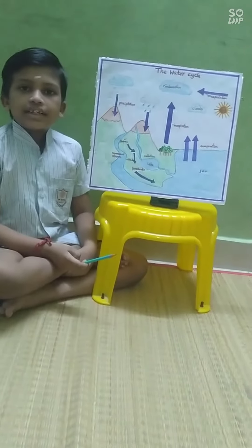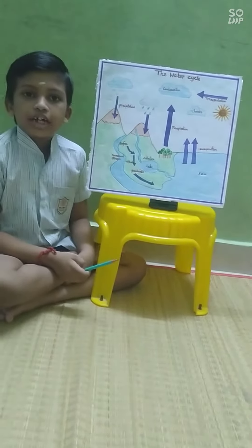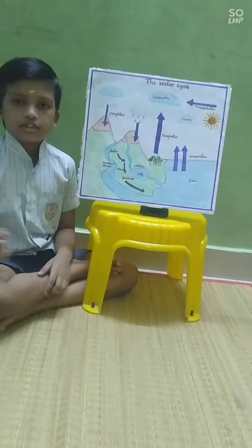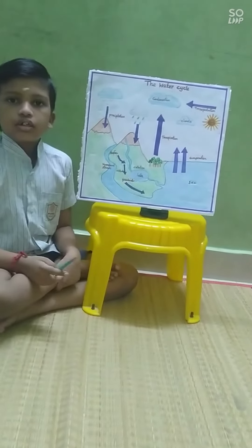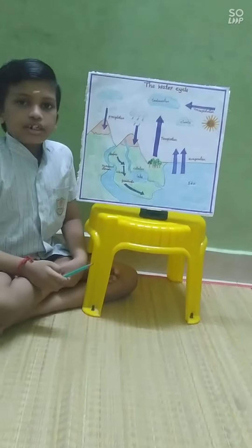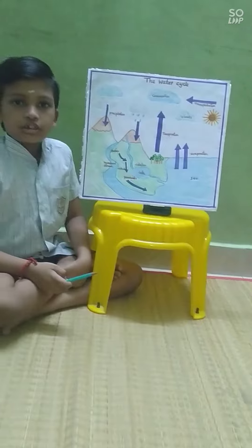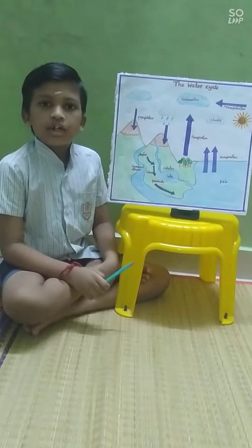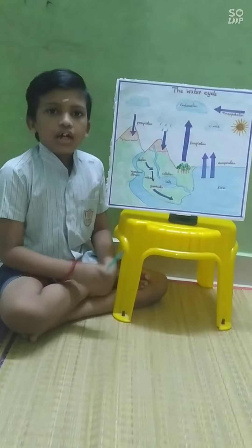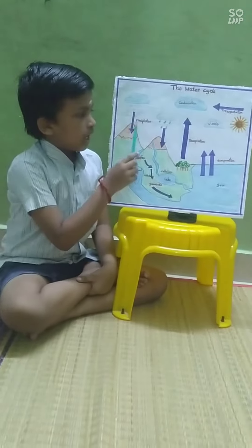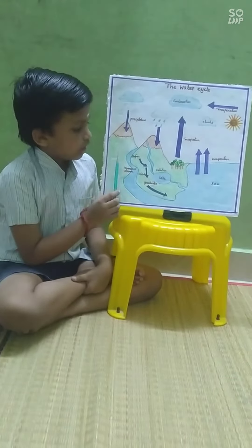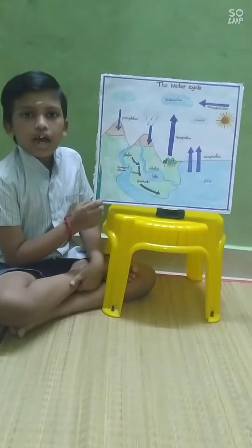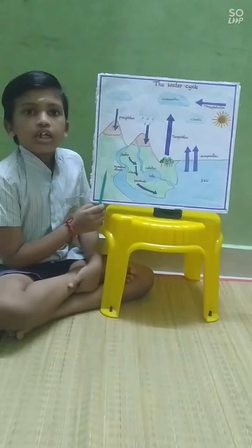The cooling tiny drops become bigger and heavy and fall as rain. This process is called precipitation. The rain water flows back to the rivers,